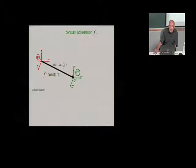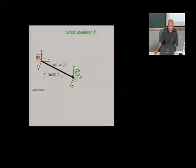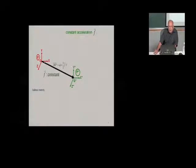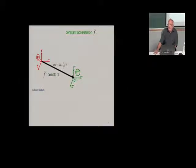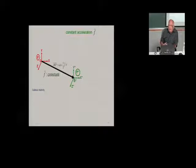Consider a red inertial frame and a green frame moving along a black arrow at constant acceleration F. The displacement vector between the two origins O and O-double-prime follows the usual equation of motion — its length increases linearly with initial velocity and quadratically with acceleration.